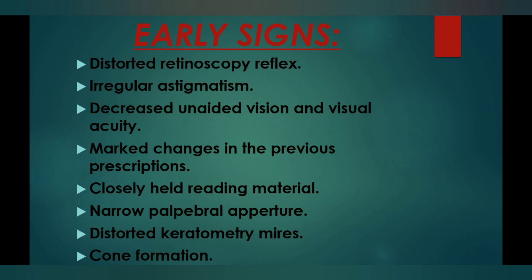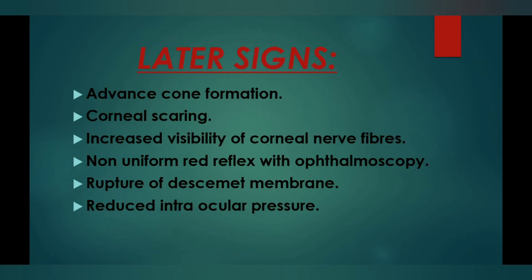The later signs of keratoconus include advanced cone formation — a more pronounced conical shape of the cornea. Corneal scarring is seen, and there is increased visibility of corneal nerve fibers, meaning the nerve fibers become visible to the naked eye. A non-uniform red reflex is also observed with the ophthalmoscope.